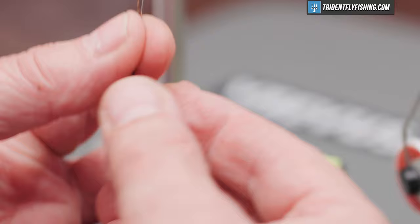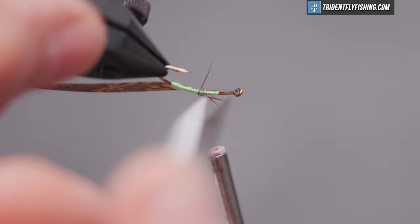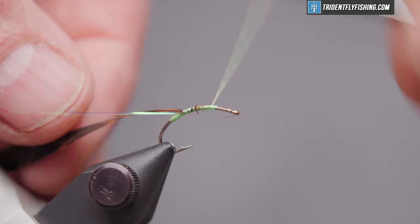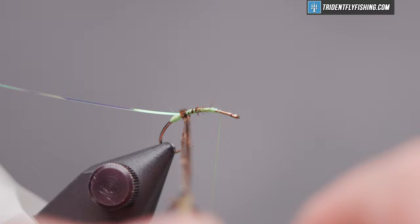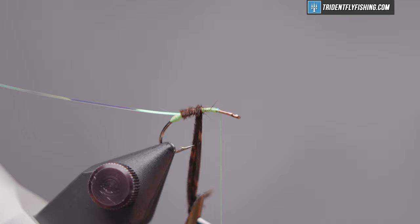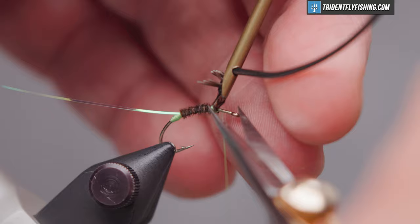And then we're going to tie these in by the tips. Even those up a bit. Cut off those excess fibers that I'm not going to be able to capture. We've got our hackle pliers. And we're going to wrap this up to our tie-in point. Forms a nice mottled colored body. And capture our material. Cut off our excess.